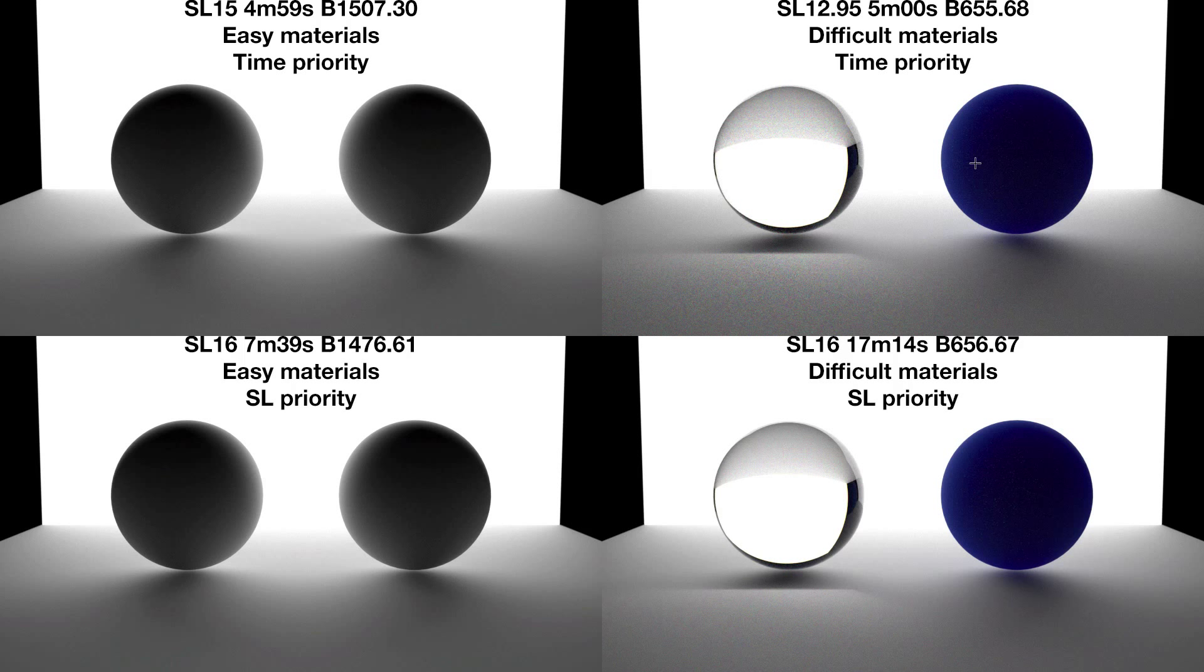These difficult materials make the scene more difficult to render. The render options for the top images were set to time 5 minutes, sampling level 16. As you can see, despite sampling level being set to 16, neither image actually reached 16 because they didn't have enough time. Maxwell stopped after 5 minutes as it was instructed to.